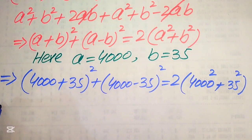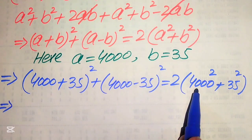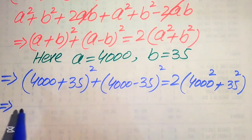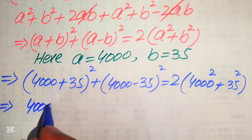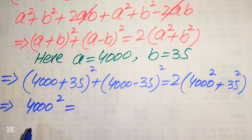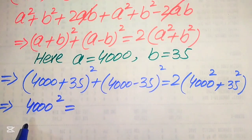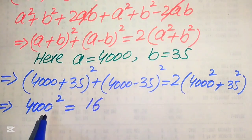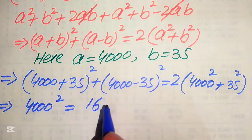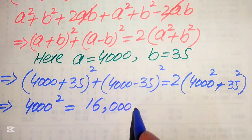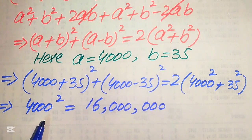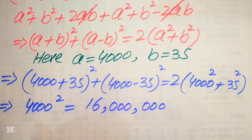In order to find the value of these terms, we first find the square of 4000. To do that, we take the square of just 4, which is 16, and then double the three zeros to get six zeros. So 4000² = 16,000,000. In the same pattern, we now find the square of 35.